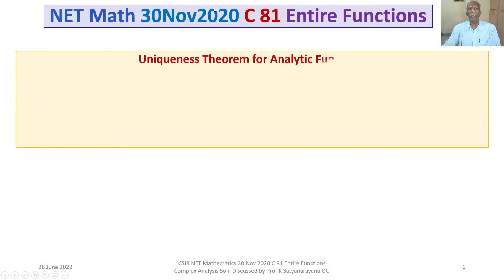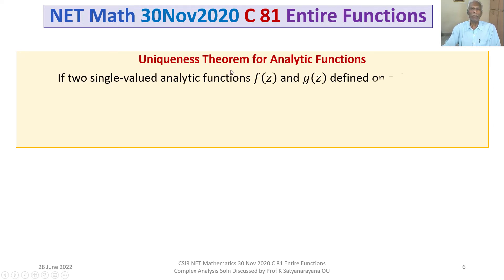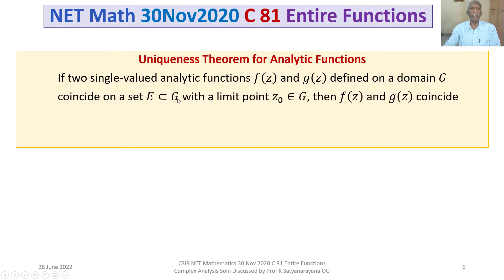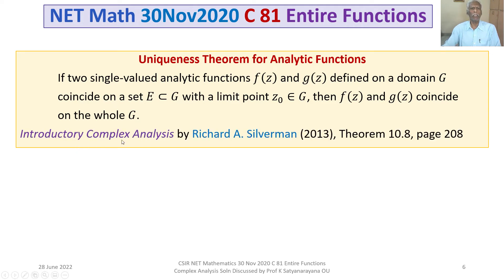Let us recall a theorem from complex analysis: the uniqueness theorem for analytic functions. It states that if two single-valued analytic functions F(Z) and G(Z) defined on a domain G coincide on a set E contained in G, with a limit point Z₀ belonging to G, then F(Z) and G(Z) coincide on the whole of G. You can find this in 'Introductory Complex Analysis' by Richard A. Silverman, as Theorem 10.8 at page 208.